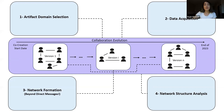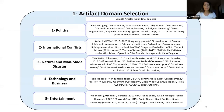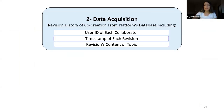Our methodology proceeds as follows: first, we select the domain; then we get the data; then we form the networks, which are beyond direct messages; and then we analyze the structure of the networks. For the first step, we selected five main domains: politics, international conflicts, disasters, technology and business, and entertainment. We have sample articles for each domain.